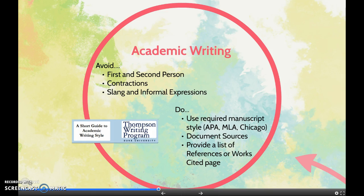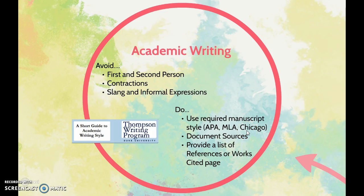Academic writing typically requires some kind of manuscript style. It could be American Psychological Association style, Modern Language Association, or Chicago style, depending on the discipline. Typically, you are required to document sources. Any content that you've taken from another source and placed in your paper, you have to acknowledge that you have done so. You typically provide a list of references or a works cited page at the end of the document.